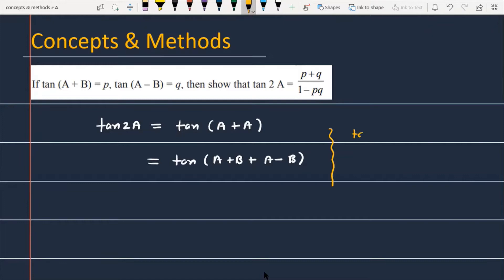Tan of A plus B, this is equal to tan of A plus tan of B divided by 1 minus tan A into tan of B. So this is actually the A part and this is the B part.